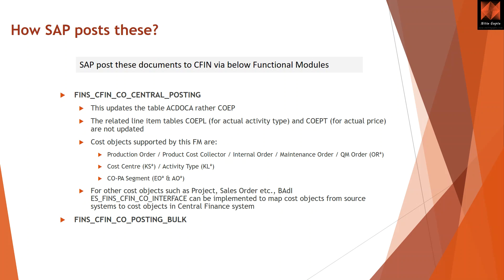The related line item tables — COEPL for actual activity type and COEPT for actual price — are not updated. Cost objects supported include production orders, product cost collectors, and internal orders. For other cost objects such as projects and sales orders, a BAdI can be implemented to map the cost object from the source to the cost object in the central system. The second functional module, generally used for bulk transactions, is FINS_CO_BULK_POSTING. These two functional modules drive the entire COBK posting process — if you face any issues, examine these modules.